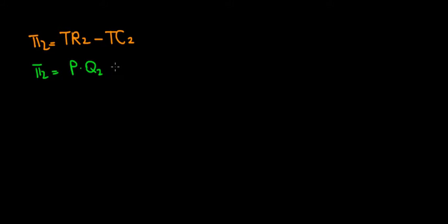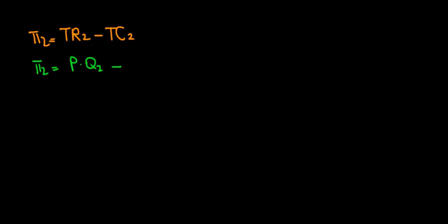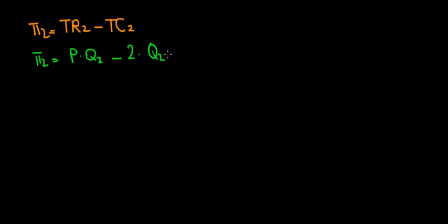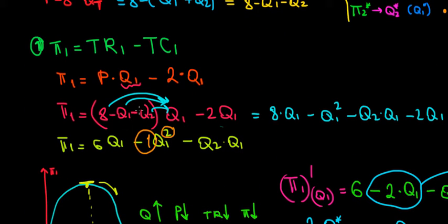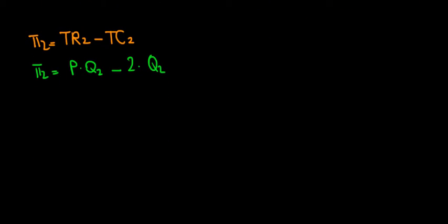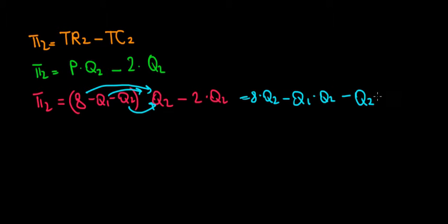The profit of the second firm will be price times the quantity of the second player minus the total cost of production. The marginal cost is two euros — that was given — so it's two for every unit of production, meaning two times Q2. The price was eight minus Q1 minus Q2, so we write: profit of the second firm equals (8 - Q1 - Q2) times Q2 minus 2Q2. Opening the brackets: 8Q2 minus Q1·Q2 minus Q2 squared.